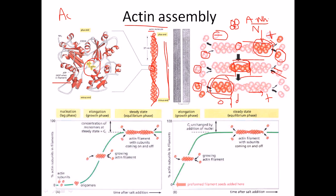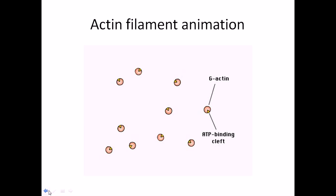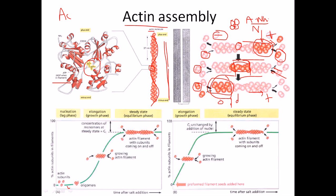We can see that actin subunits are placed here, and they form the nucleus. After formation of the nucleus, more and more actin will come in, join together, and finally make the actin filament. In the very first step it is the lag phase — no actin filament forms. After the nucleation has been completed, we see a rapid increase in polymerization, which we call the log phase.